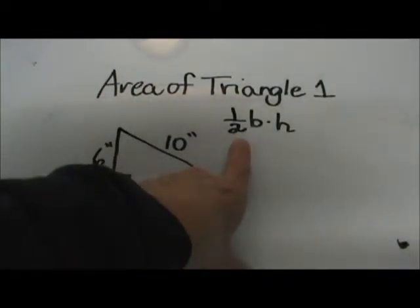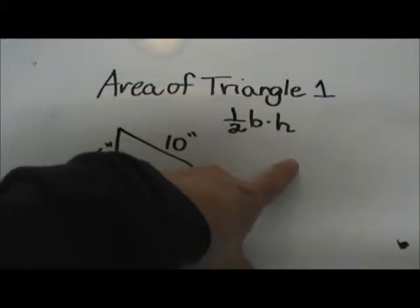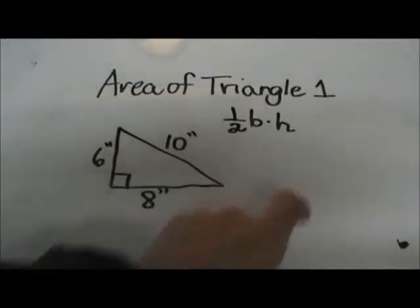The formula to find the area of a triangle is one half the base times the height. We need to know the base and the height to plug into the formula.